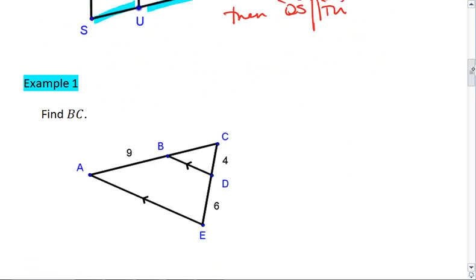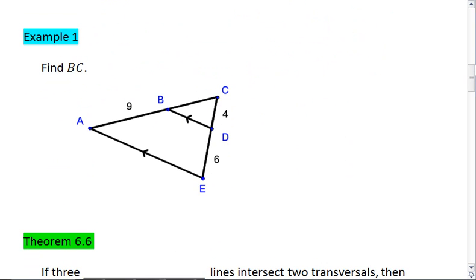Now, let's look at an example. Example 1, we want to find the length of BC, which I've labeled with X. We see that we have two parallel lines.